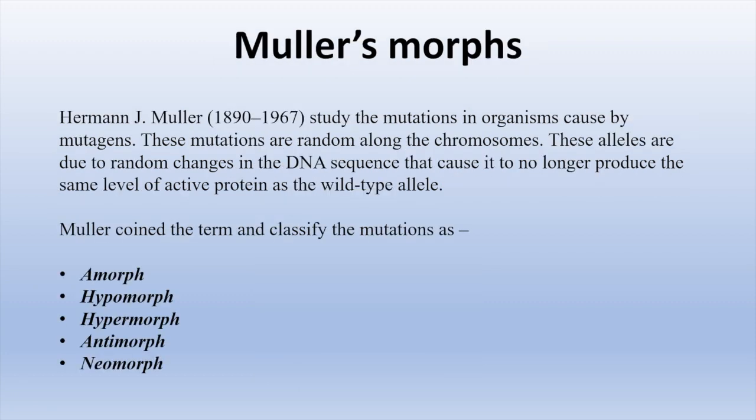Renowned geneticist H.J. Muller observed that due to mutation, genes don't produce the same level of proteins as the wild-type allele. He also coined the terms amorph, hypermorph, antimorph, and neomorph to classify mutations based on their behavior in various genetic situations. These morphs are known as Muller morphs.